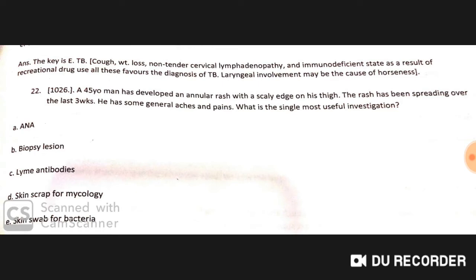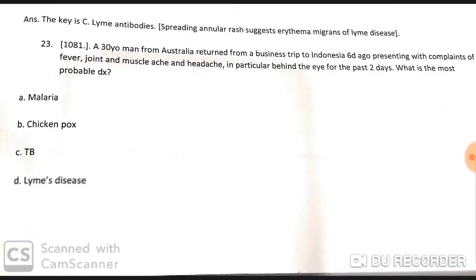A 45-year-old man has developed an annular rash with a scaly edge on the thigh. The rash has been spreading over the last three weeks, and he has general aches and pains. The most likely investigation is Lyme antibodies, as this is a Lyme disease case.